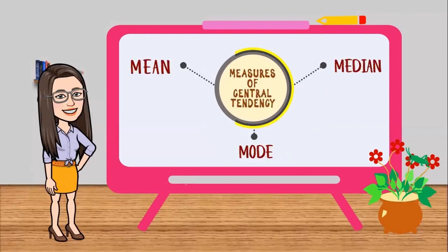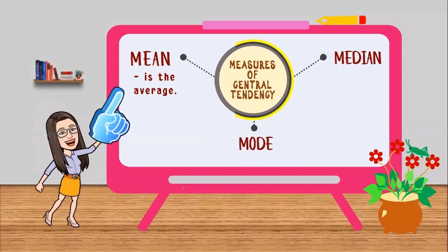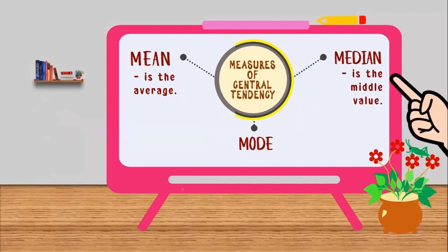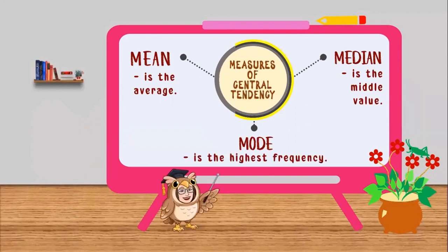What is mean? Mean is just simply the average. Median is simply the middle value of the set of data. And mode is the highest frequency, meaning the set of data that occurs frequently.